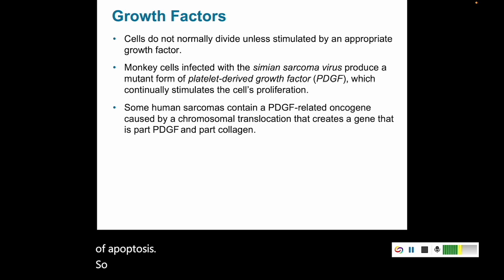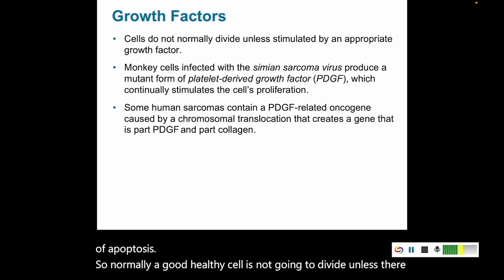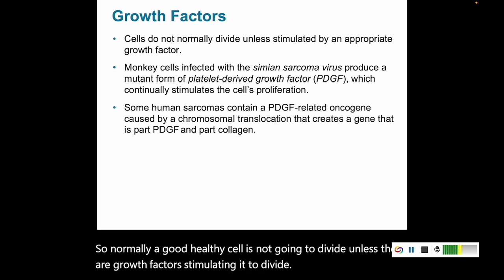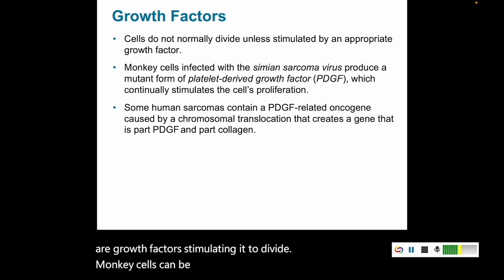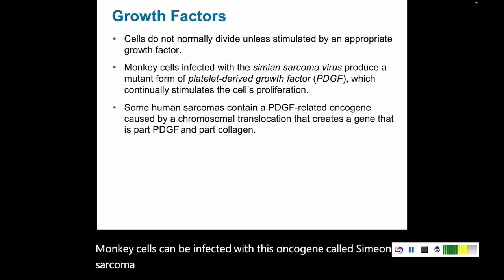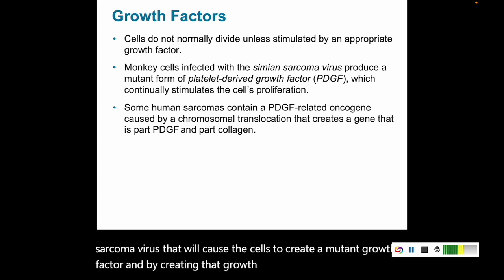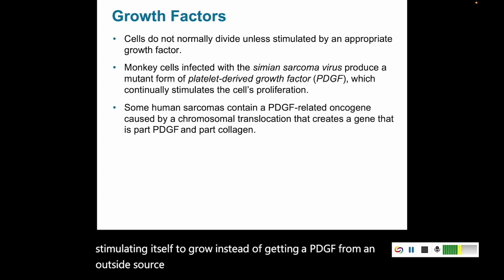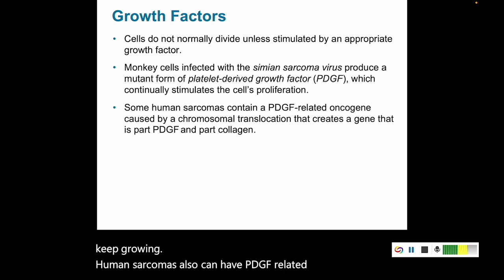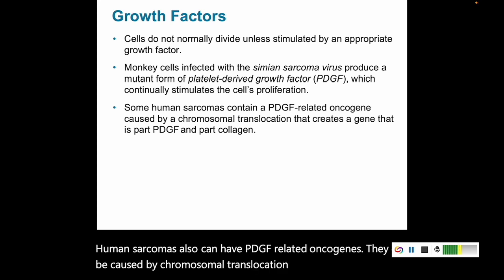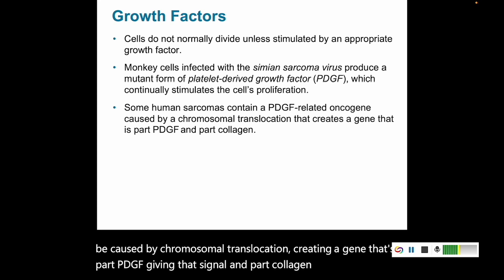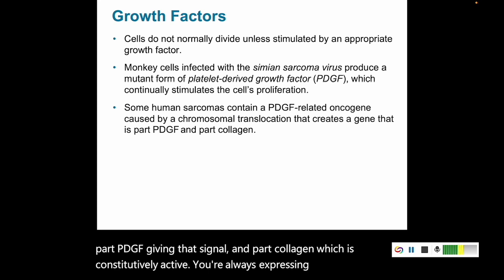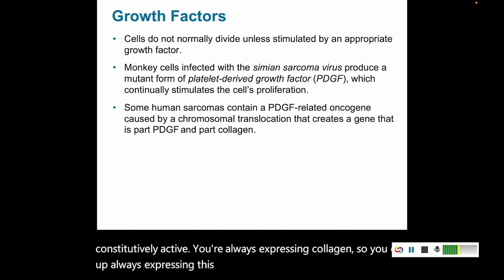Normally a healthy cell is not going to divide unless growth factors stimulate it to divide. Monkey cells can be infected with an oncogene in the simian sarcoma virus that causes the cells to create a mutant growth factor, and by creating that growth factor, the cell is constantly stimulating itself to grow. Instead of getting a PDGF signal from an outside source saying it's time to grow, it just tells itself to keep growing. Human sarcomas can also have PDGF-related oncogenes caused by chromosomal translocation, creating a gene that is part PDGF and part collagen, which is constitutively active — so you always express this oncogene and always get that growth factor signal.